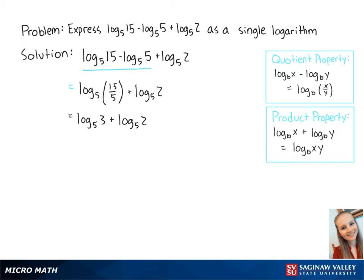Now we can use the product property to combine the remaining logs. So this equals the log base 5 of 3 times 2, which equals the log base 5 of 6. This is the final answer.